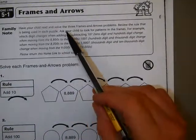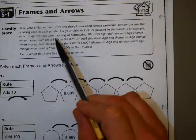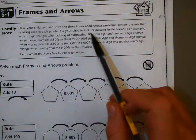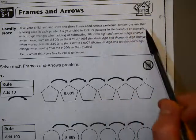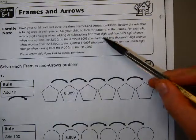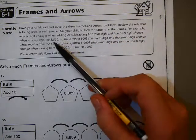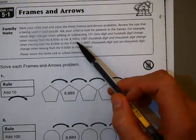Have your child read and solve the three frames and arrows problems. Review the rule that is being used in each puzzle. Ask your child to look for patterns in the frames. For example, which digit changes when adding or subtracting ten? Ten's digit and hundred's digit change when moving from the 8,800s to the 8,900s.